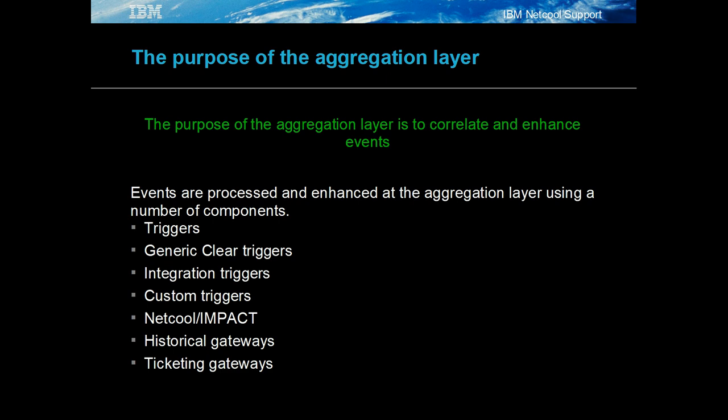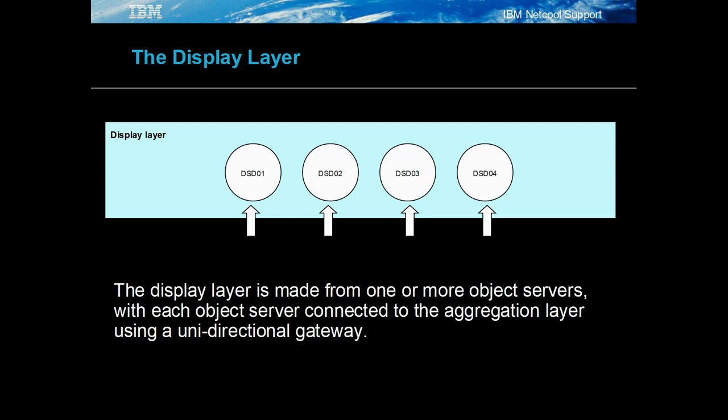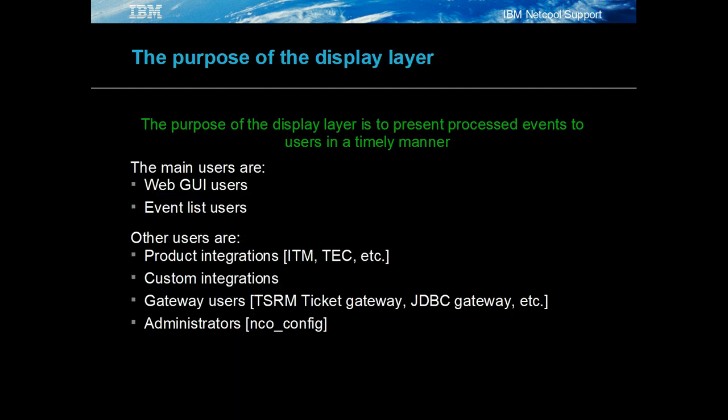Events are typically processed using object server triggers and enhanced by NetCall Impact. A ticketing gateway is typically used for event problem management, and a historical gateway such as the JDBC gateway is used to provide event management reports. The display layer is made up of a set of one or more object servers connected to the aggregation layer using unidirectional object server gateways. Their data is a copy of the aggregation layer object servers. The main users of the display layer are event list users and web GUI.